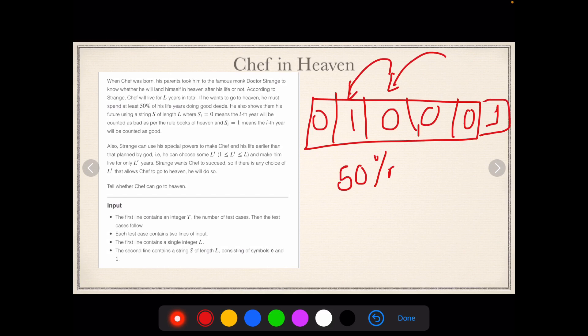The Doctor Strange that his parents took him to has a special power of churning the given string, reducing the length to L prime. Now what is L prime? L prime is something between one and L. So just get the question that initially we are given a string of length L, and the Doctor Strange has powers of reducing the length to L prime.